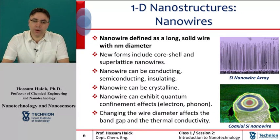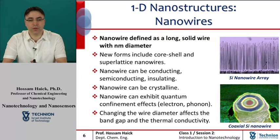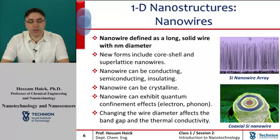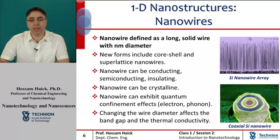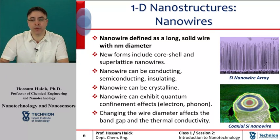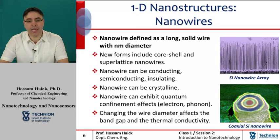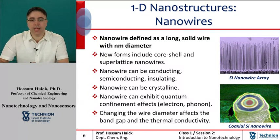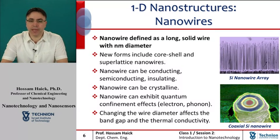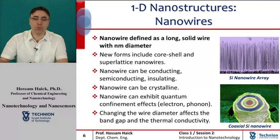A nanowire is a nanostructure with a diameter on the order of nanometers. Alternatively, nanowires can be defined as structures having a thickness or diameter constrained to tens of nanometers or less, and an unconstrained length. At these scales, quantum mechanical effects are important, and therefore they are given the term quantum wires.